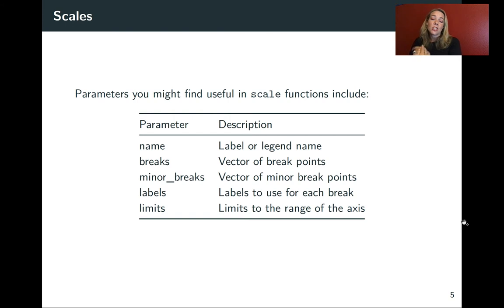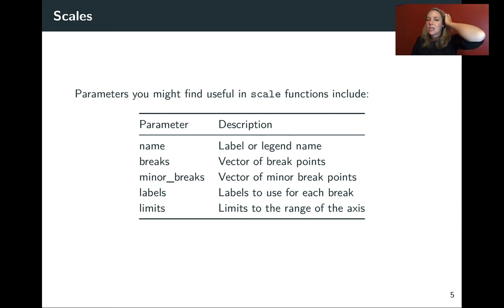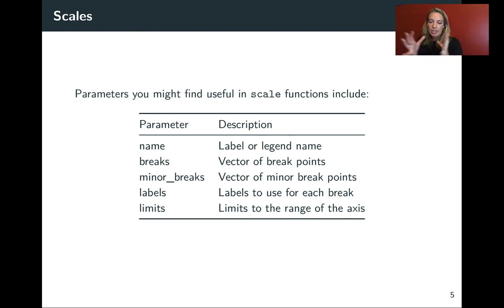There are a number of parameters that often show up in scale functions that you might find useful. Those include name, which allows you to specify the name of that scale; breaks and minor_breaks, which let you say where to put those labeling specifications; labels, if you want something other than the default number or factor level; and limits, if you want to expand the axis to include zero or zoom in to highlight part of your data.